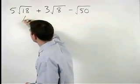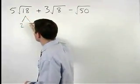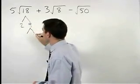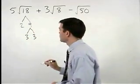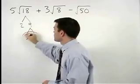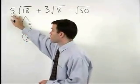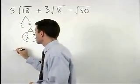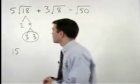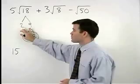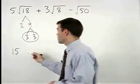18 is 2 times 9, and 9 is 3 times 3. So a 3 will come out of the radical, which multiplies times the 5, and we have a 15 on the outside, and on the inside we're left with the 2 that did not pair up.